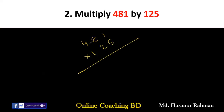We have to multiply 481 by 5. 5 times 1 is 5. 5 times 8 is 40, so carry 4. 5 times 4 is 20 plus 4, that is 24. Now we have to give 0 at the units place. 2 times 8 is 16, carry 1. 2 times 4 is 8 plus 1, that is 9.